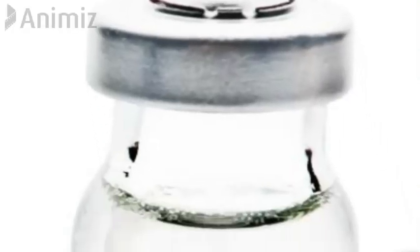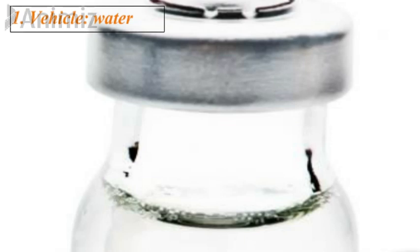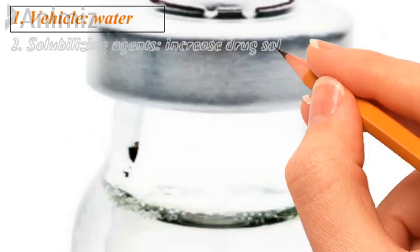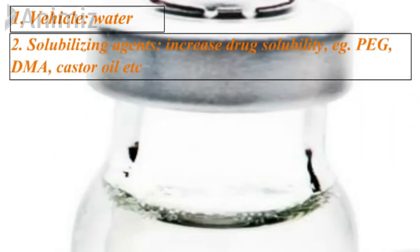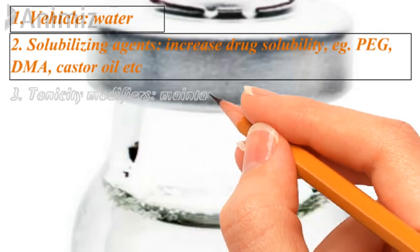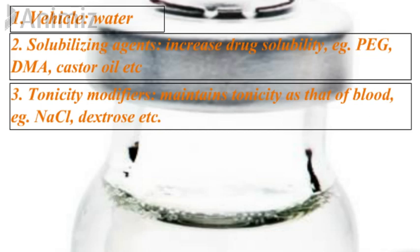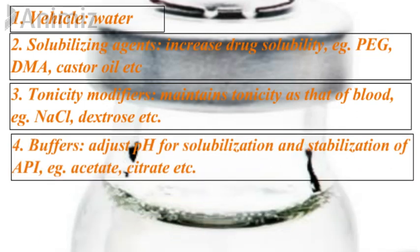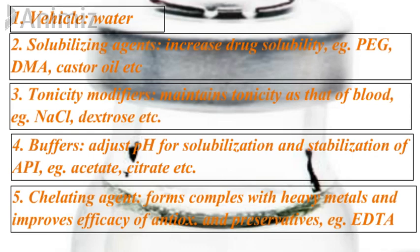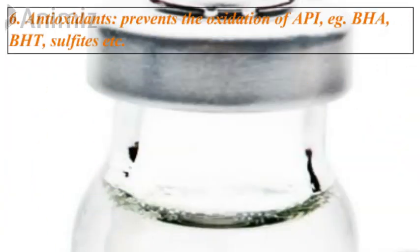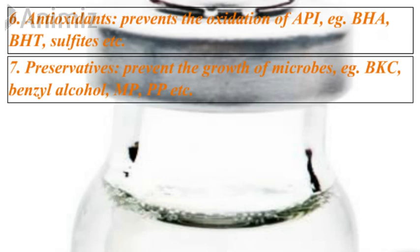Then we have injectable dosage forms. The vehicle is water in most cases, except intramuscular injections which may use oil. A solubilizing agent increases drug solubility — examples are PEG, DMA, or castor oil. Tonicity modifiers maintain osmolarity matching that of blood — sodium chloride or dextrose are used. Buffers adjust pH for solubilization and stabilization of the API — examples are acetate and citrate buffers. Chelating agents form complexes with heavy metals and improve efficacy of antioxidants and preservatives — example is EDTA. Antioxidants prevent oxidation of the API — examples are BHA, BHT, and sulfites. Preservatives prevent microbial growth — examples are BKC, benzyl alcohol, methylparaben, and propylparaben.